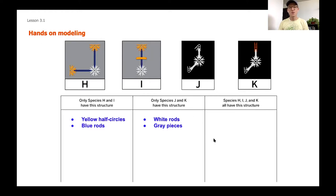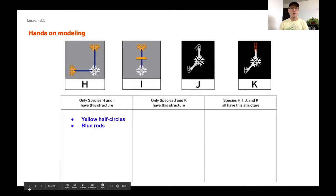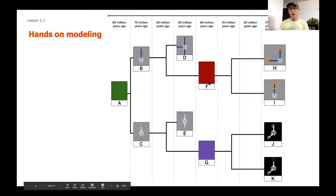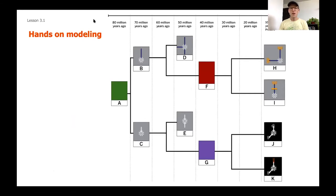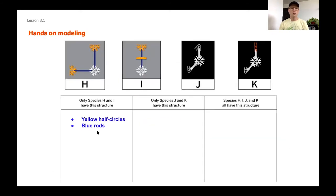Now we think about what all four species have in common — and we saved this for last. The thing that H, I, J, and K all share is the white circles. This is going to help us work backwards to determine what species F and G are going to look like. Pause the video and think: based on our table, what do you think species F and species G are going to look like? What shared structures might tell us about those ancestors?